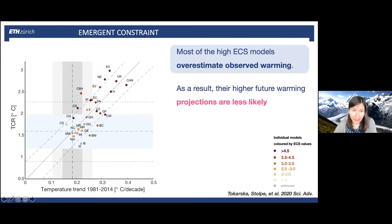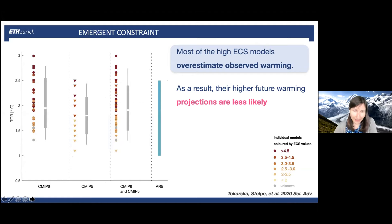Models are colored by their ECS value; all models outside the 4.5°C IPCC likely range are shown in dark red. These high-ECS models are outside the observational constraint range. We applied this for CMIP6 alone, CMIP5 alone, and the joint CMIP5 and CMIP6 sample — results are consistent regardless of which set of models is used. In all cases, the median value is brought lower and the upper end of the 5–95% range is also lower. As a result, the multi-model mean from CMIP6 global mean warming is biased high, and most high-ECS models overestimate observed warming, so their future projections are less likely.